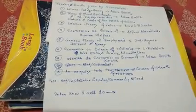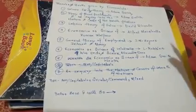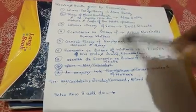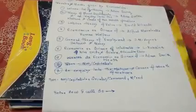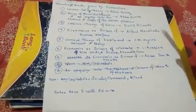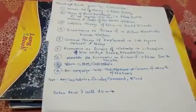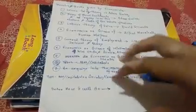The third is the 'Labor Theory of Value,' given by David Ricardo. Fourth, economics as a science of human welfare is given by Alfred Marshall — as we learnt in question one. The 'General Theory of Employment, Interest and Money' is given by J.M. Keynes. Economics as a science of the relationship between ends and scarce alternative uses is given by L. Robbins. Economics as a science of wealth is given by Adam Smith.